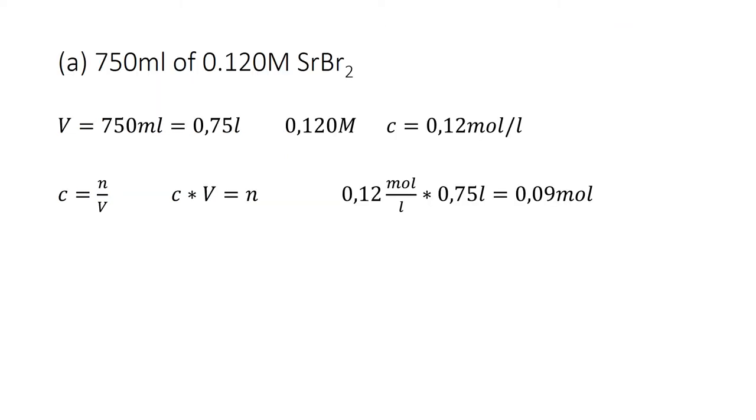In task A you got 750 milliliters of 0.12 M strontium bromide. 750 milliliters equals 0.75 liters, and you got a concentration of 0.12 mole per liter. If you multiply the concentration with the volume you get the total number of moles. 0.12 mole per liter multiplied with 0.75 liter results in a total number of 0.09 moles.